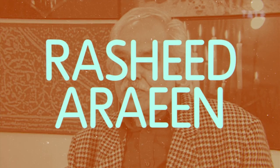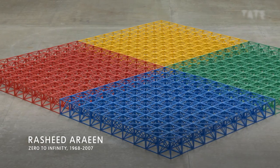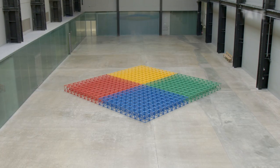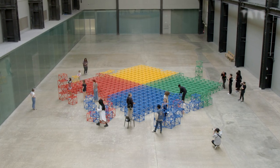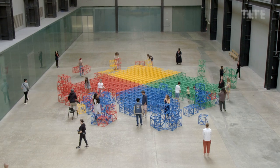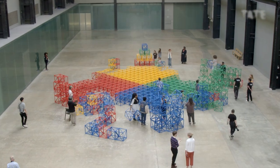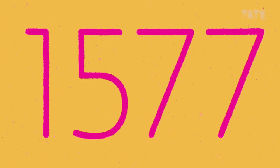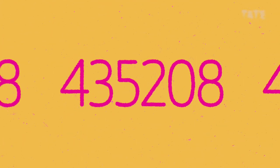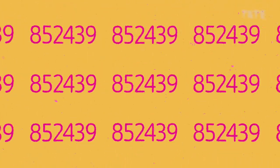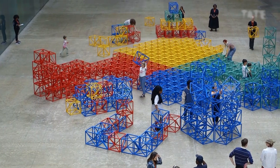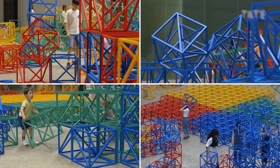Another artist fascinated by maths and shapes is Rashid Arayn. His sculpture, Zero to Infinity, is made up of lots of wooden cubes that start off as a big square. But he invites you to work collaboratively with other people to touch, move, shift and stack them into something new! Zero is just the start and infinity represents the endless number of forms we could create with his cubes, so the artwork can keep changing and going on and on and on!